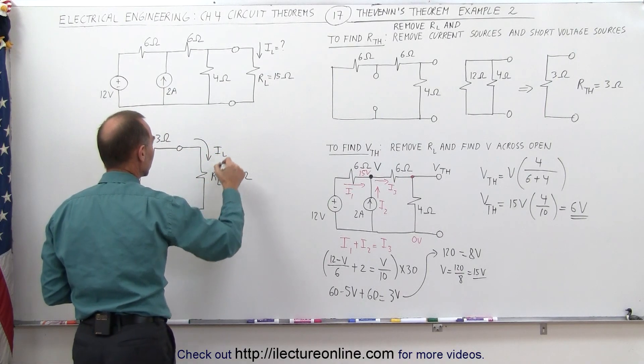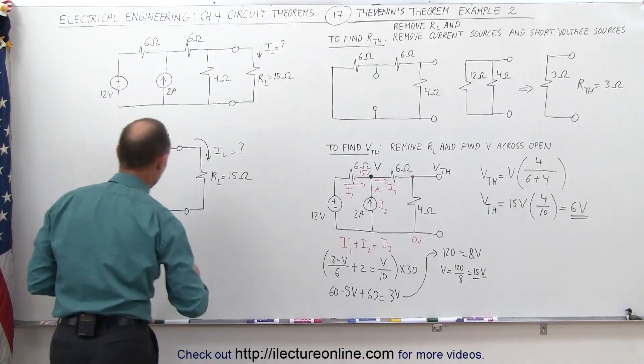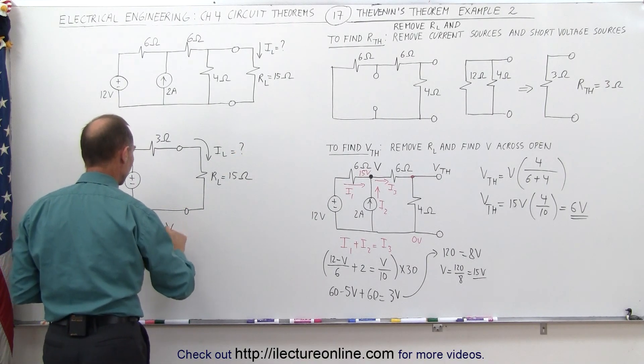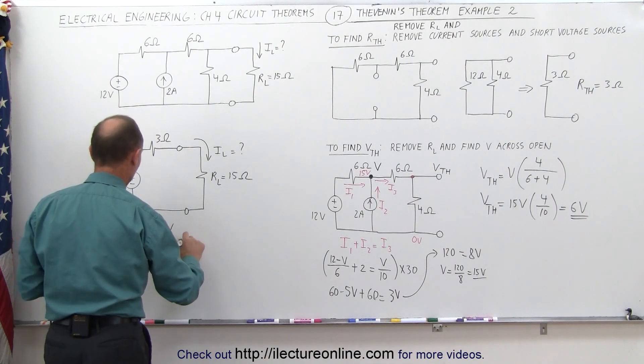I through the load is equal to question mark. Well, we know that according to Ohm's law, the current through the load is equal to the voltage applied divided by the total resistance. In this case,